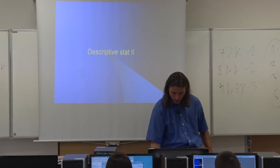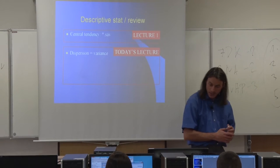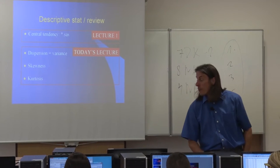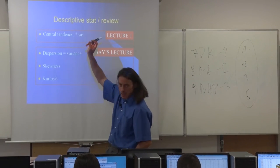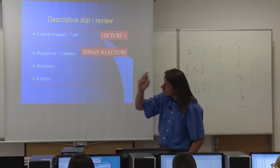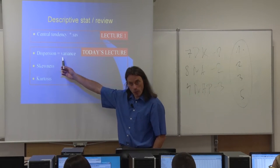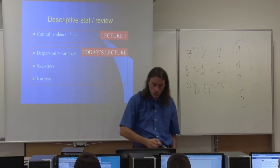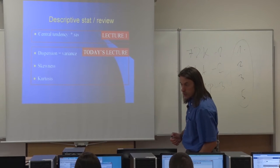Now let's open the next presentation and continue our discussion of descriptive statistics. Here is a short review: from previous lectures we know central tendency — mean, median, mode. Today we learn about dispersion or variance, and also about skewness and kurtosis. These four are the basic description for data, mainly for cardinal variables.